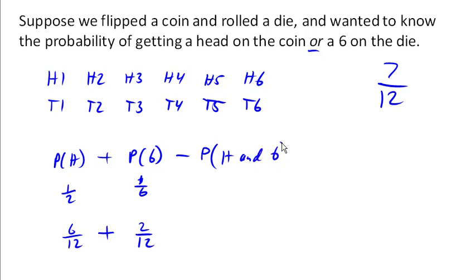So we're going to subtract out the probability of a heads and a 6. And there's a 1 out of 12 there. And if we combine that, 6 plus 2 is 8, minus 1 is 7 twelfths.